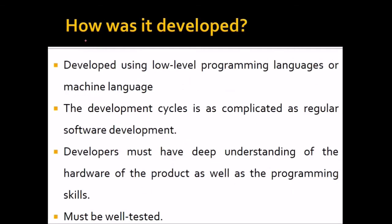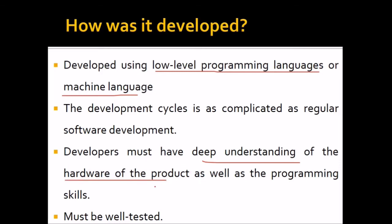How is firmware developed? Firmware is developed using low-level programming languages or machine language. The development cycle is as complicated as regular software development. Developers must have a deep understanding of the hardware of the product as well as strong programming skills. It must be well tested, because once it is firmly attached to the hardware device, there is no looking back.